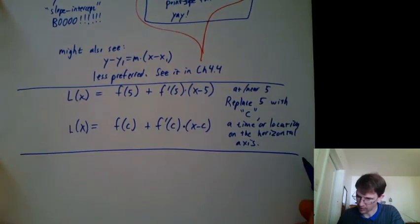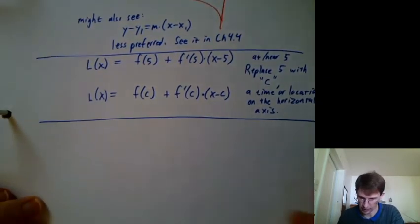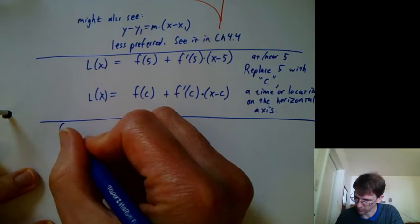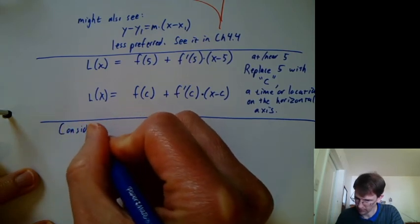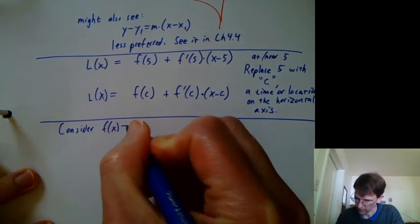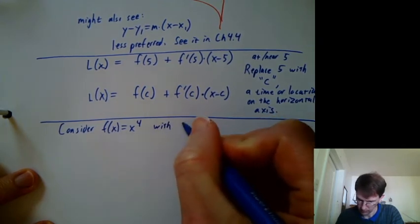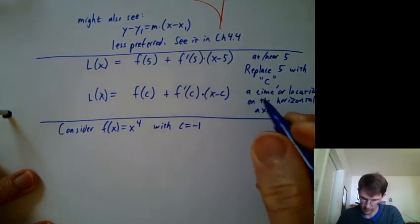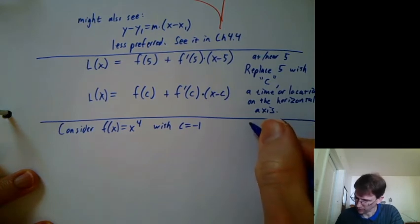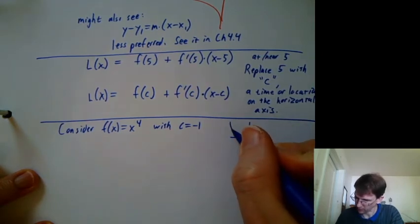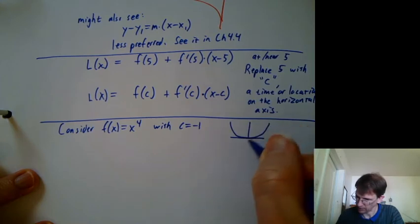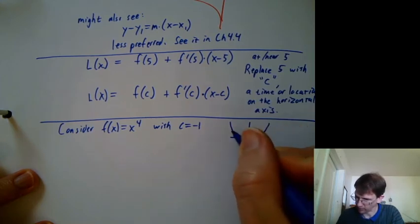So let's try applying this. It's actually kind of tricky. Let's do a new problem. Let's consider f of x equals x to the fourth with c equals negative 1. It's usually a good idea to graph things when you can. Again, x to the fourth looks like a parabola with a really flat point near the origin. And here I am at c equals negative 1.